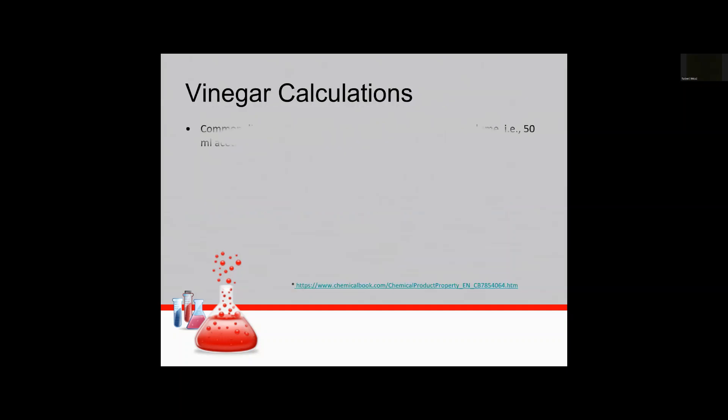All right so for vinegar common distilled vinegar that you get at the store is five percent acetic acid by volume. And you know that means that for one liter 50 milliliters is acetic acid. So that's just the five percent that we're using. So the density of acetic acid at 25C is about 1.05 grams per milliliter. So it follows then that we have 52.45 grams per liter of acetic acid as a number that we're going to use in the next step.